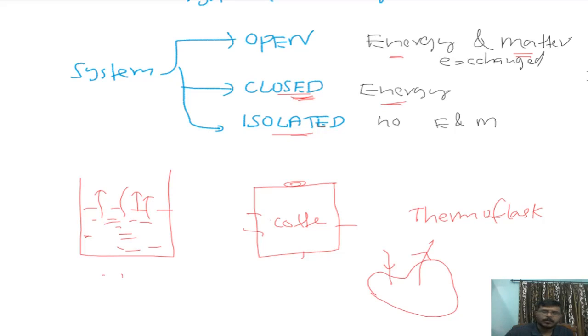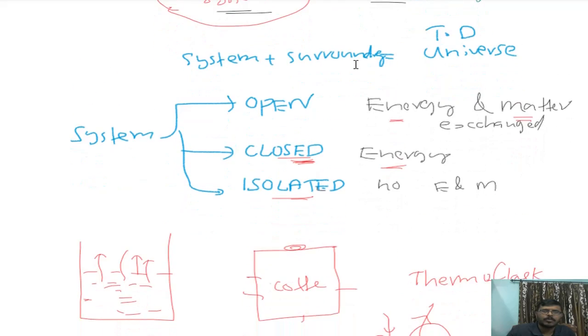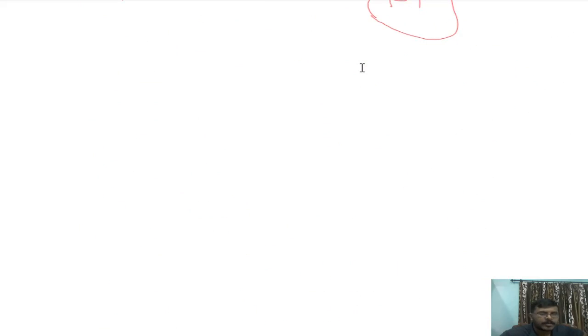Now let us consider the boundary between system and surrounding. There are two types of boundary.